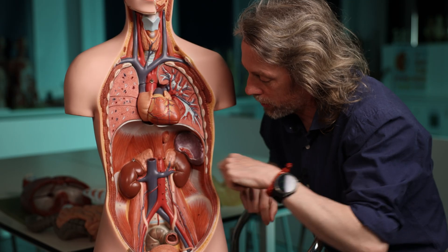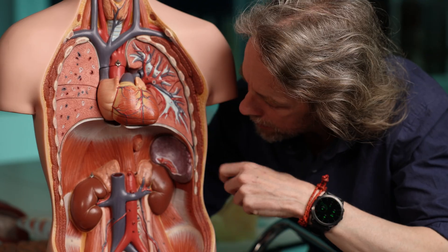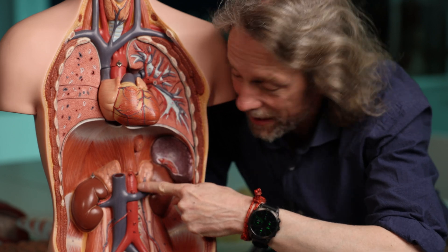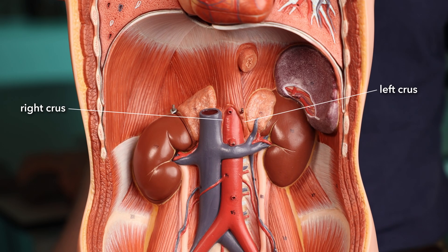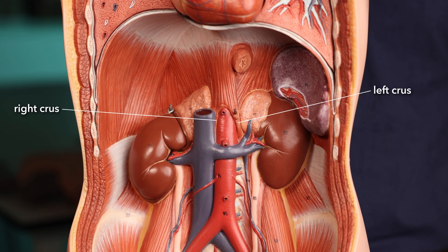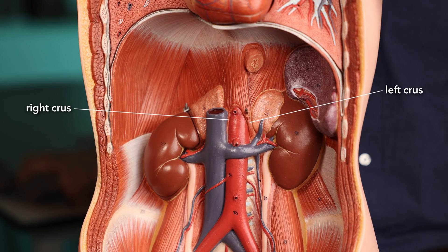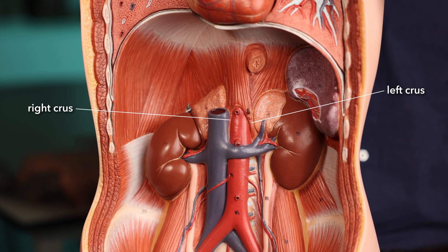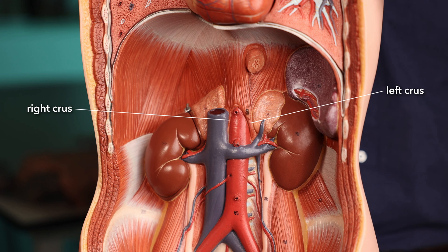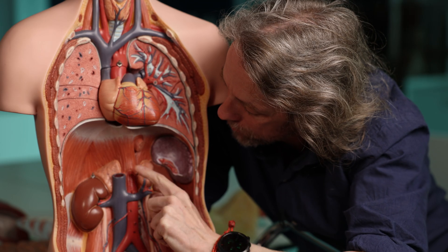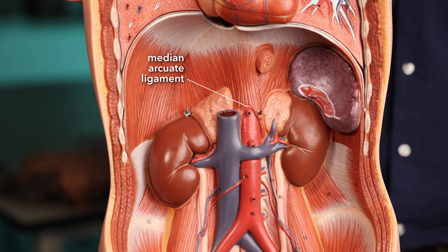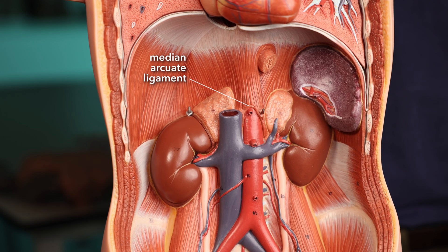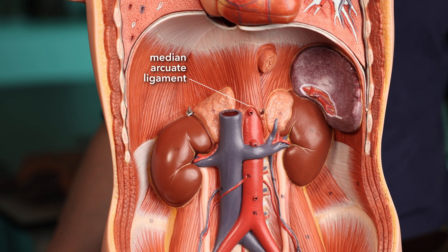The left crus passes to the L2 vertebral body and the right crus passes to the L3 vertebral body. They go either side of the aorta, and we can see this curve as the aorta passes through the aortic hiatus. This curve here that we can see anteriorly — that is the median arcuate ligament.